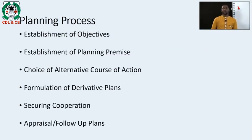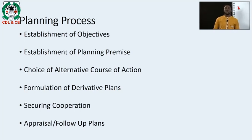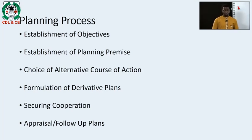What are the various processes of planning? The stages include: establishment of objectives, establishment of planning premise, choice of alternative course of action, formulation of derivative plans, securing cooperation, and appraisal and follow-up of plans.